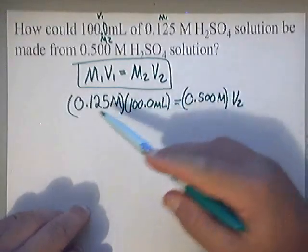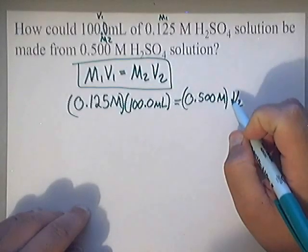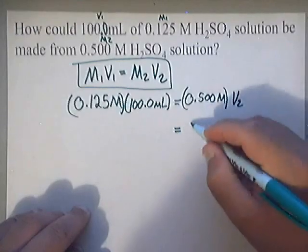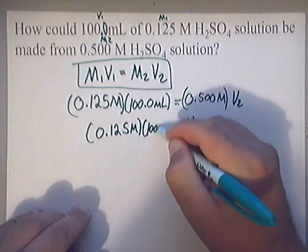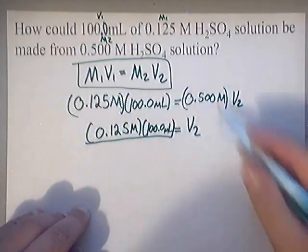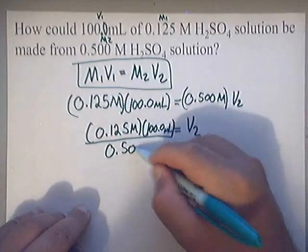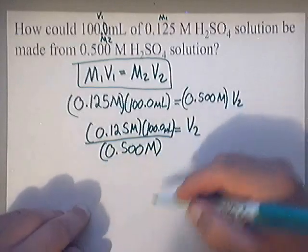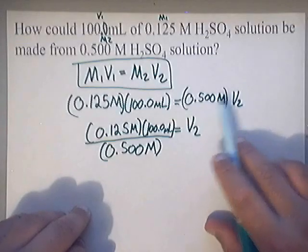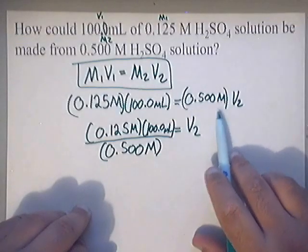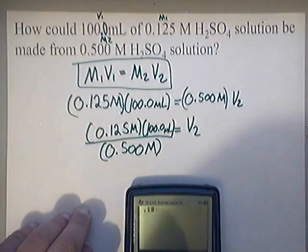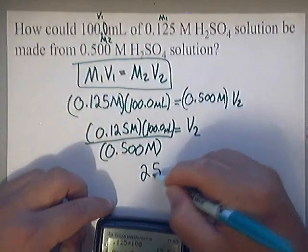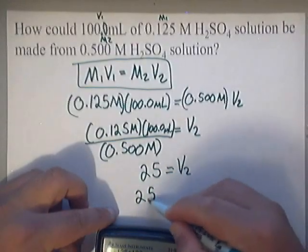Algebraically, this number times this number equals M2 times V2. To isolate V2, divide both sides by 0.500. So V2 = (0.125 molarity × 100.0 mL) ÷ 0.500. Punching that into the calculator — 0.125 times 100 divided by 0.5 — gives us 25. So V2 = 25 milliliters.